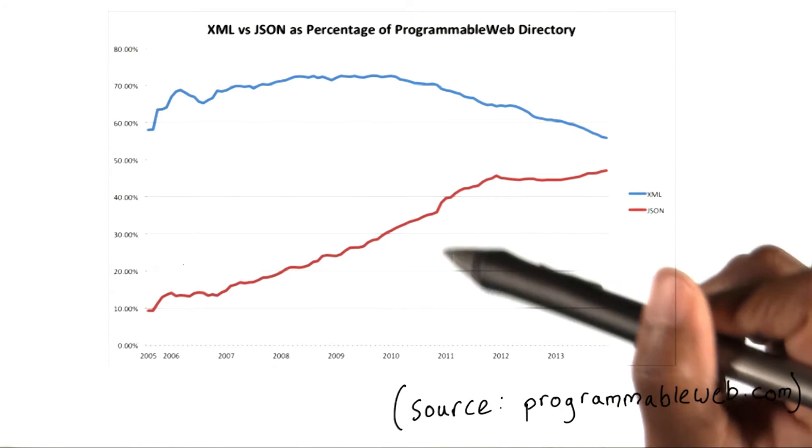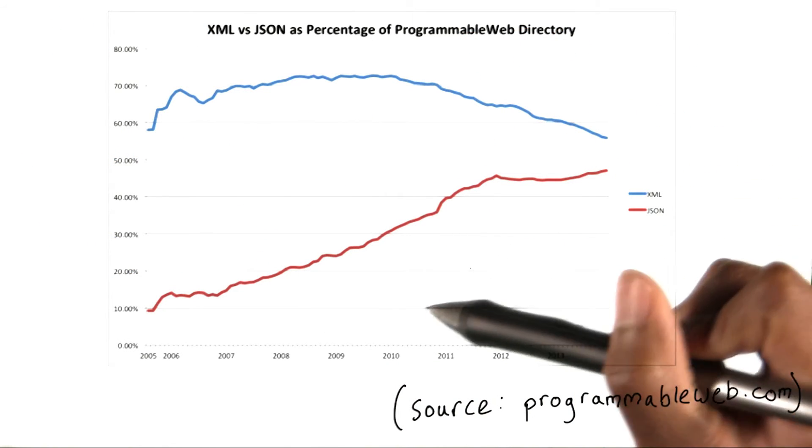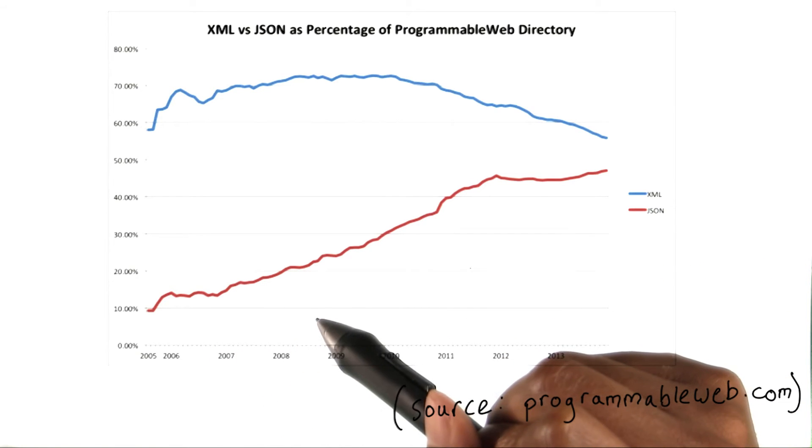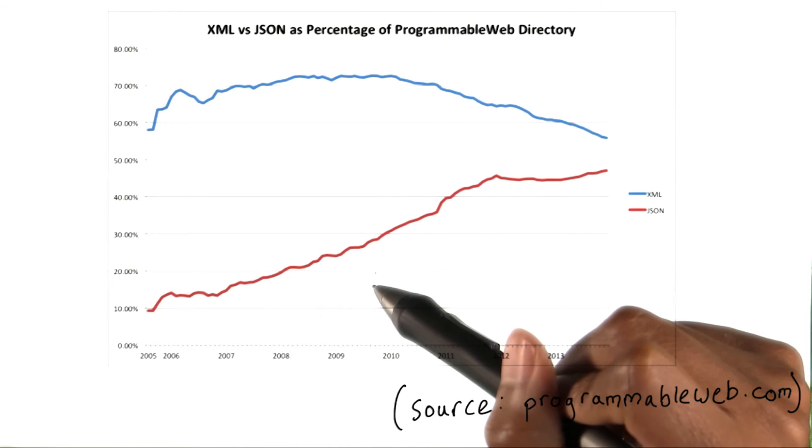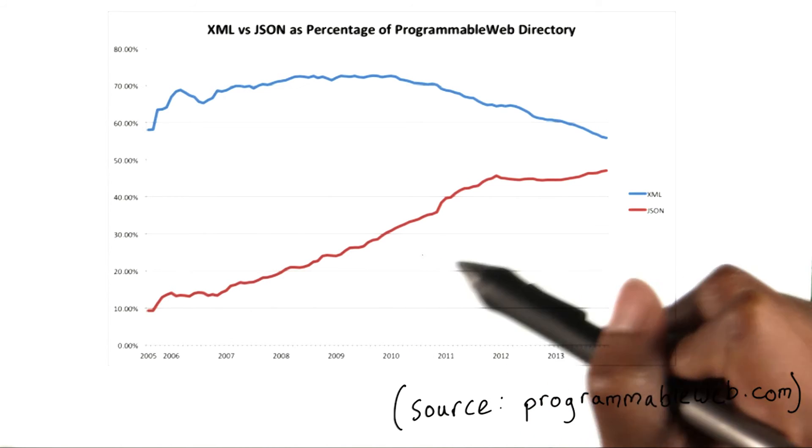Looking at this chart, we can see that XML started as the data structure of choice. But JSON has been quickly gaining ground year over year and is now the more popular data structure amongst new APIs.